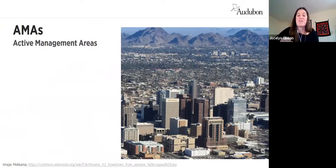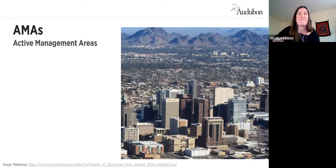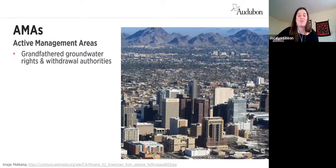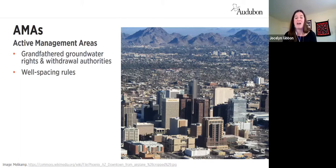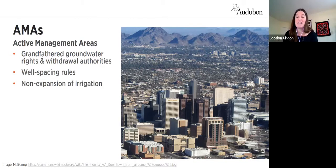Within an AMA, a set of tools and requirements are used to manage water. These include groundwater rights established based on existing water use when the AMA was created — inside an AMA, a person needs a groundwater right or another kind of permit in order to pump groundwater. Next are well spacing rules: if you're going to drill and pump from a new well, you must first assess how much it will impact nearby wells, and if the impact is too great you have to modify, move, or not drill your planned well. Another major tool is non-expansion of irrigation: once an AMA is established, no additional irrigated lands can be brought under cultivation, since agriculture is the biggest water user in Arizona.